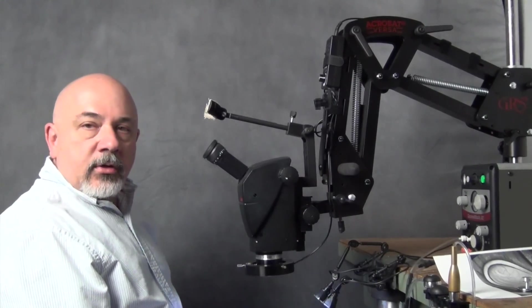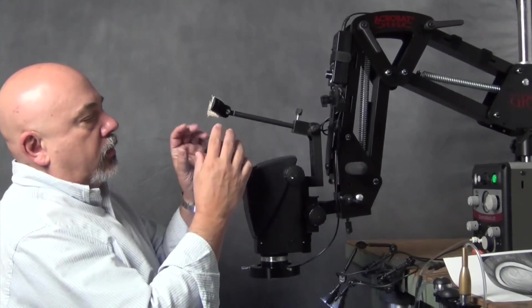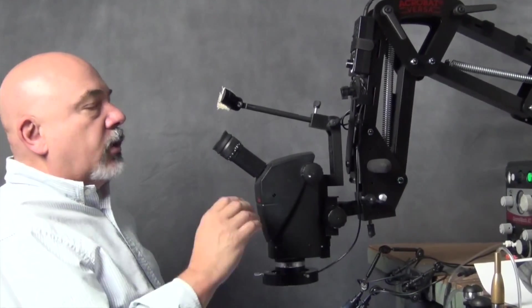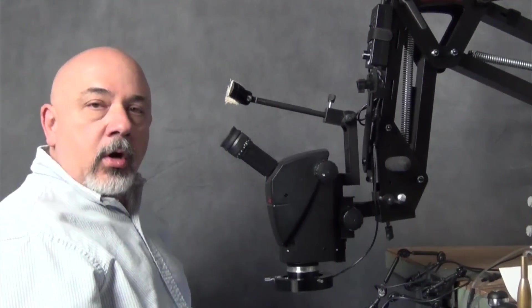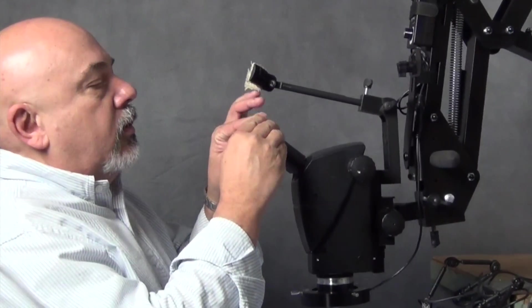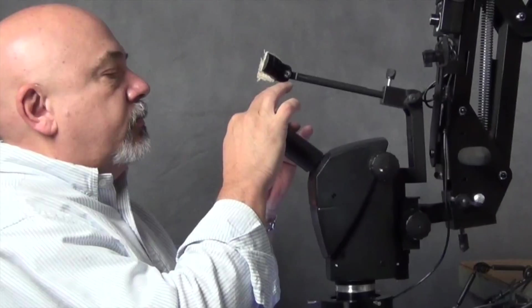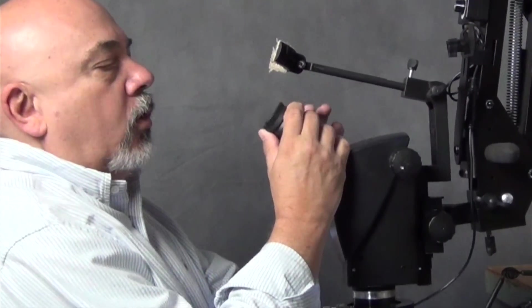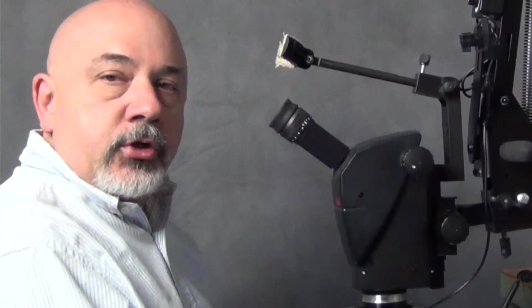The eyepieces on the microscope have rubber eye cups that just pop out like this, so if you're an eyeglass wearer, you don't have to worry about scratching your eyeglasses on the microscope eyepieces. You can fold these down or pop them out, whichever is your preference.